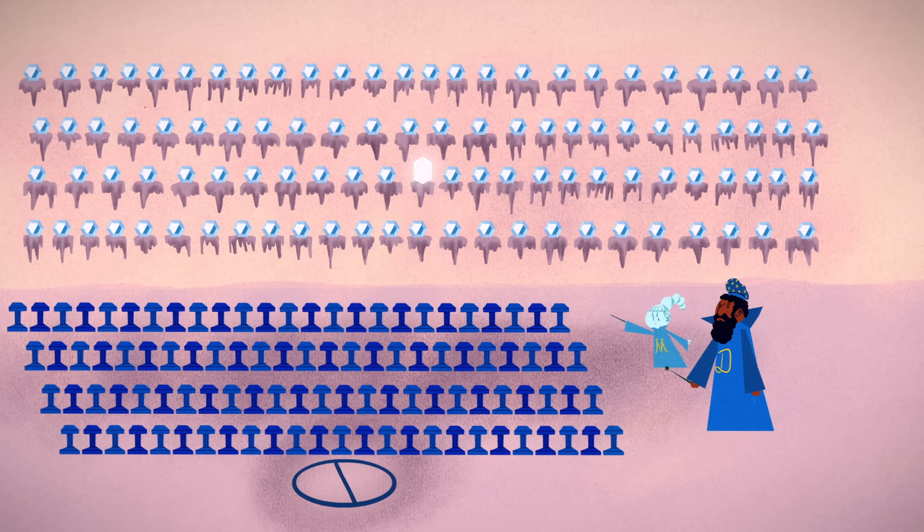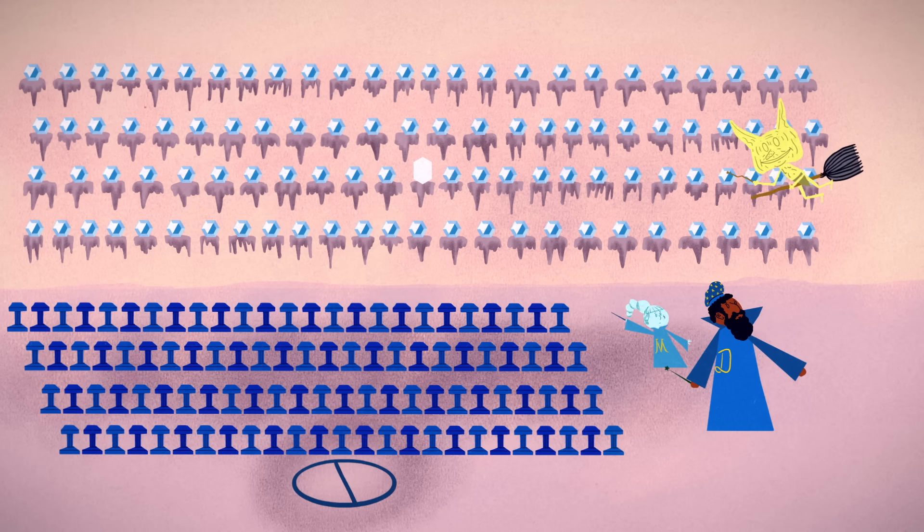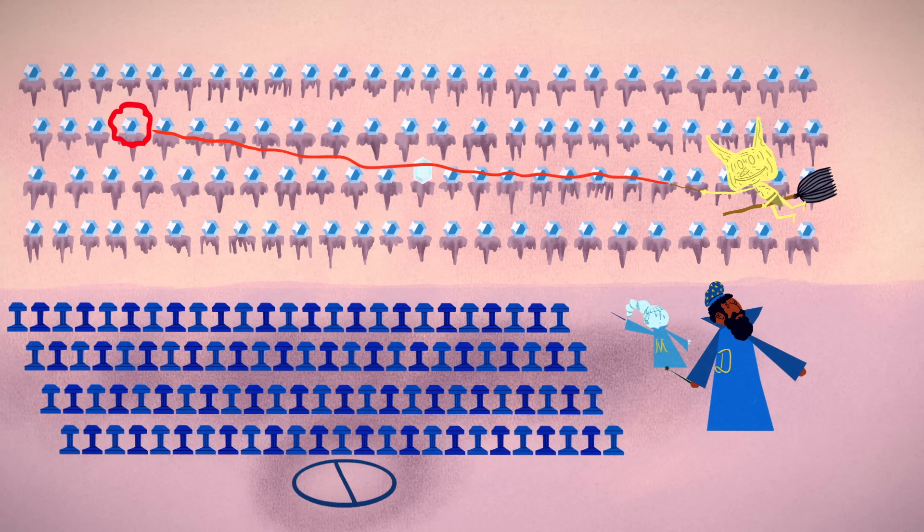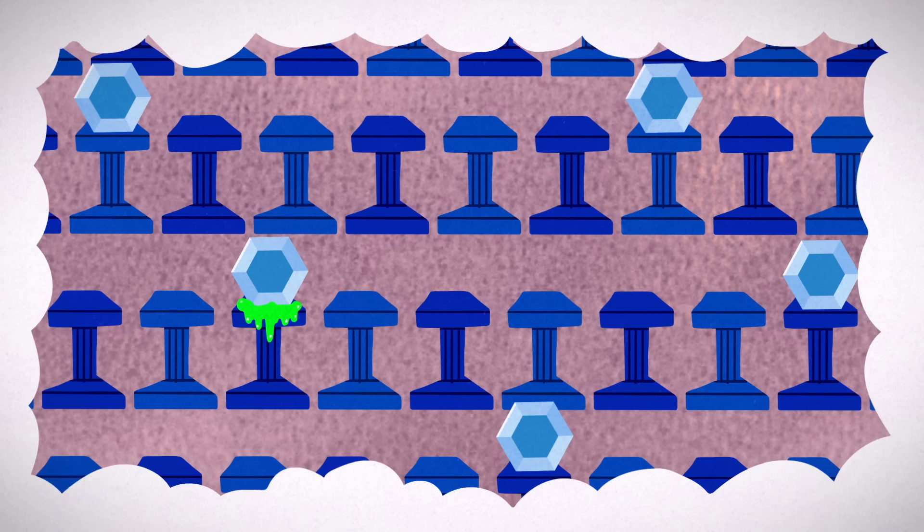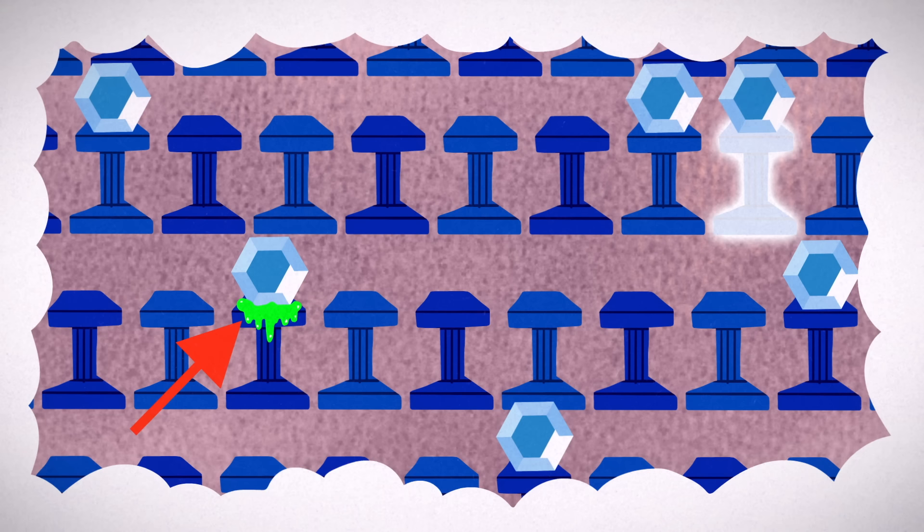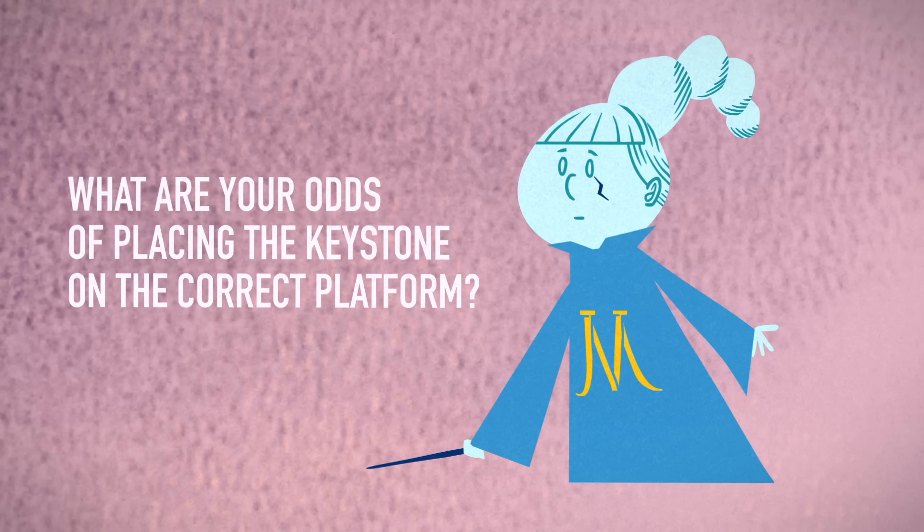You're about to get started when one of Moldavort's henchmen arrives and irreversibly seals a random stone to a random platform. If you need to place a stone that belongs on a platform that's already occupied, your spell will make some random unoccupied platform glow instead. What are your odds of placing the keystone on the correct platform?